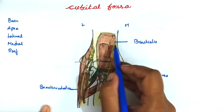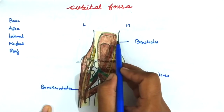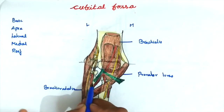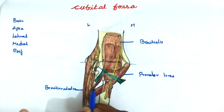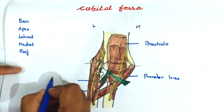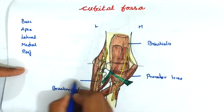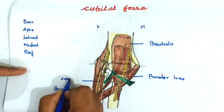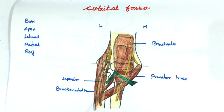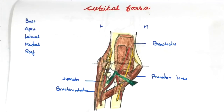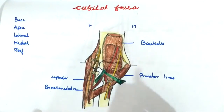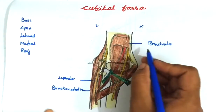The floor is formed by two muscles: the upper and medial part of the floor is formed by the brachialis muscle, whereas the lower and lateral part is formed by the supinator muscle. This completes the boundaries of the cubital fossa.